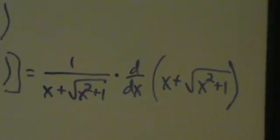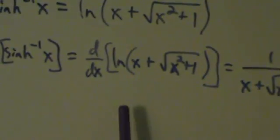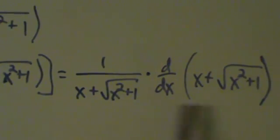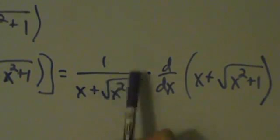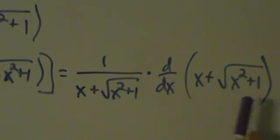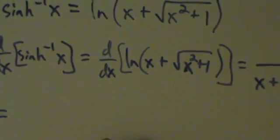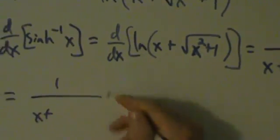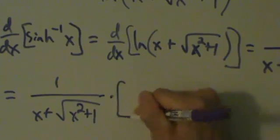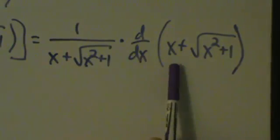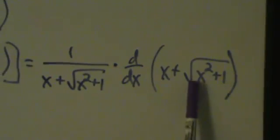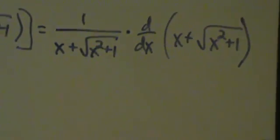So applying the chain rule: 1 over that thing times the derivative of that thing. Now let's simplify. The 1 over part stays as 1 over (x plus root x squared plus 1). Then we differentiate term by term inside: derivative of x is just 1, plus the derivative of the square root of x squared plus 1.